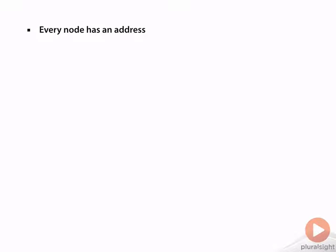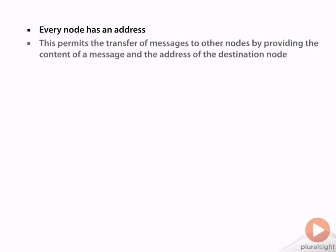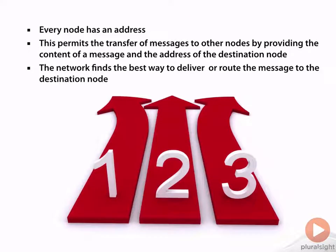Every node on a network has an address. This allows me to send messages to other nodes by taking the content of a message and the address of the destination node, combining those two together into a packet, and sending it along its way. The network is going to have to find the best way to deliver or route these packets to the destination node. It's common for networks to have multiple paths to select between — path one, path two, or path three — and it's up to the routers to figure out which is the best path to take.